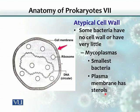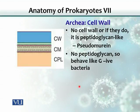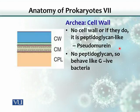Archaea cell walls are also unique. They may have no cell wall, and if they do, it is peptidoglycan-like, and that is the reason we call them pseudomurine. Pseudo means false — it is a kind of false wall. There are no peptidoglycans, so these archaea behave like gram-negative bacteria.